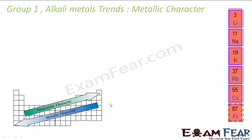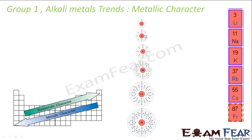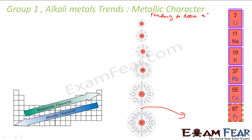The general trend we have seen is that metallic character increases as we go down the group. Similarly here also the metallic character has to increase. Why? Because of the increase in size. Metallic character is the tendency to lose electron. So if you go down the group, since the electrons here are less controlled by the nucleus, they have more tendency to lose electron. The tendency to lose electron is increasing, so the metallic character will also increase.